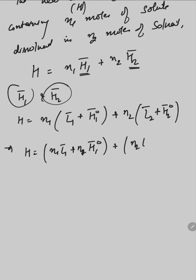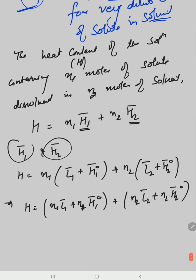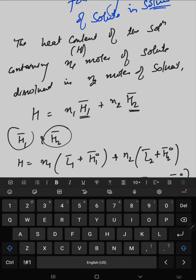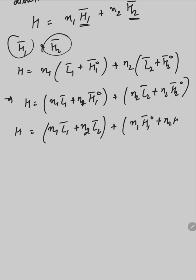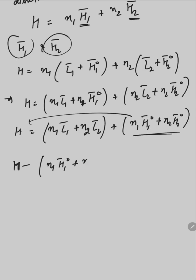Multiplying out for n2 as well, we get: H is equal to n1*l1 plus n2*l2 plus n1*h1 naught plus n2*h2 naught.